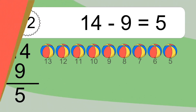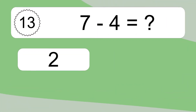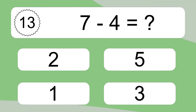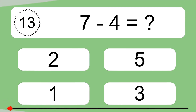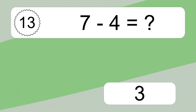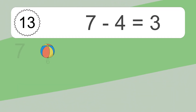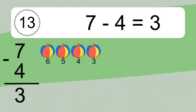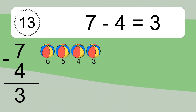7 minus 4 equals what? 7 minus 4 equals 3. Let's count it. 6, 5, 4, 3.